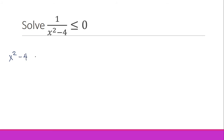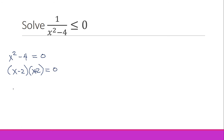Let's focus on x² minus 4 and try to factor it out, because we can only get the critical numbers from the denominator. Equating this to zero, we have x² minus 4 equal to zero. x² minus 4 is a difference of two perfect squares, so we can factor it. Factoring gives us (x minus 2)(x plus 2) equal to zero.